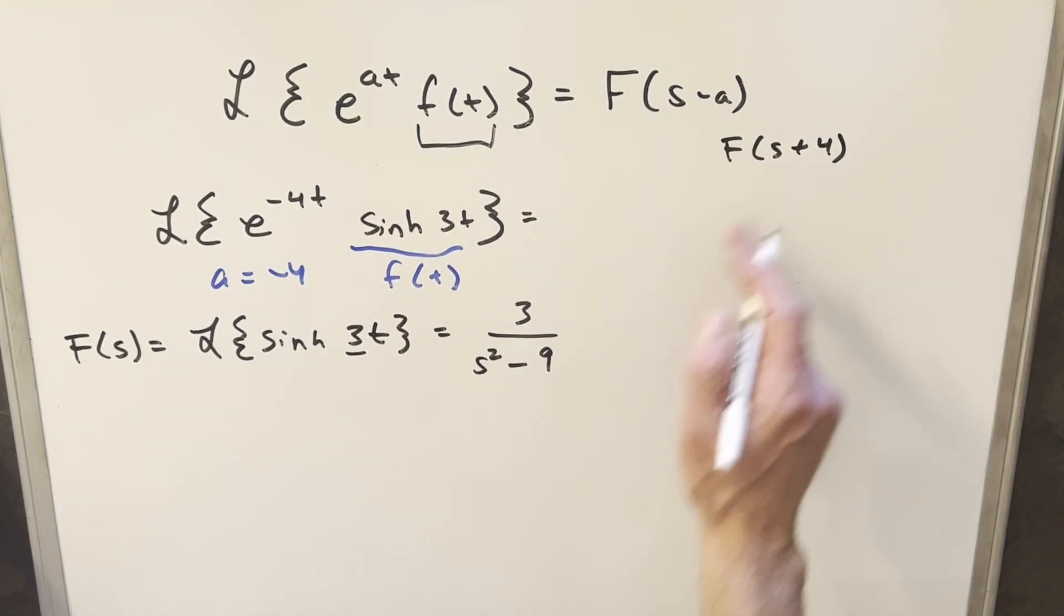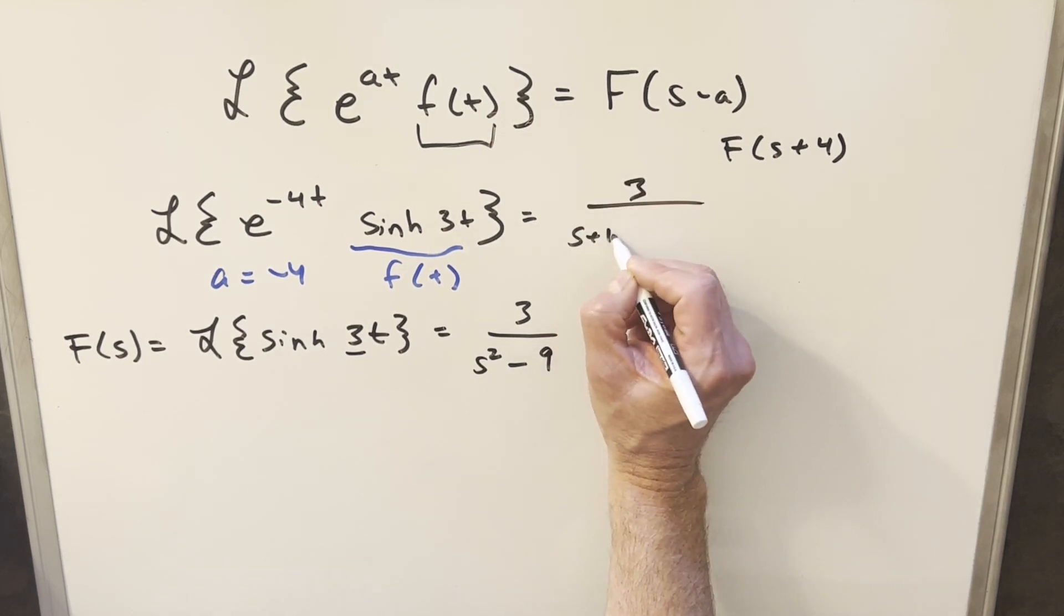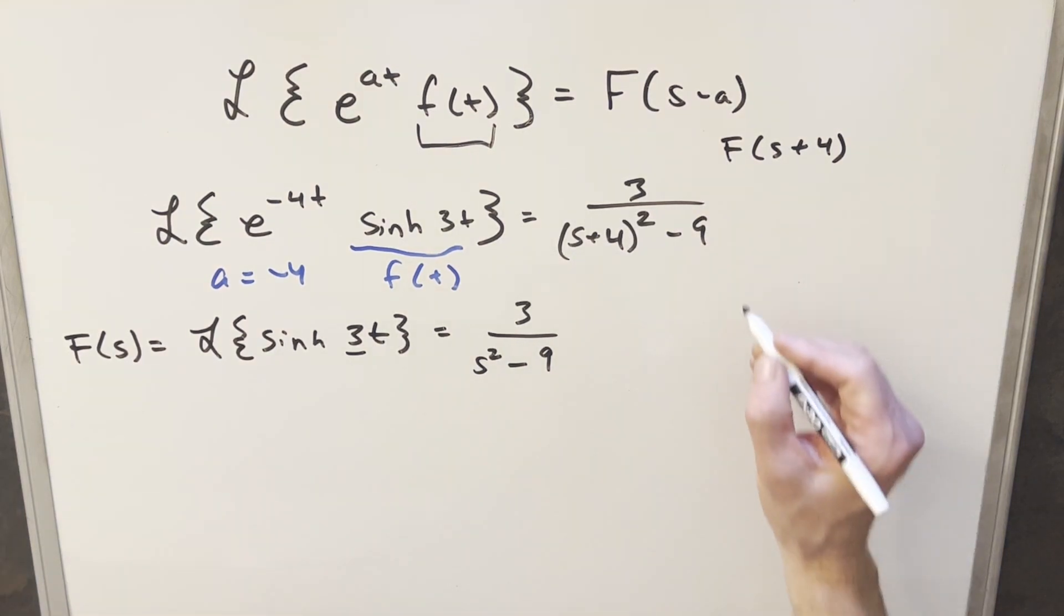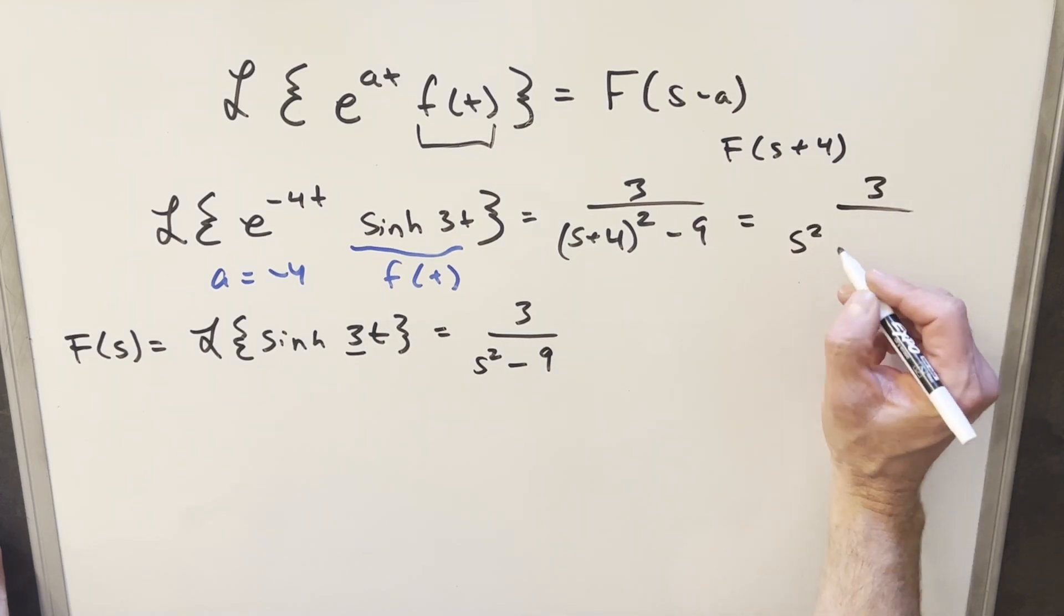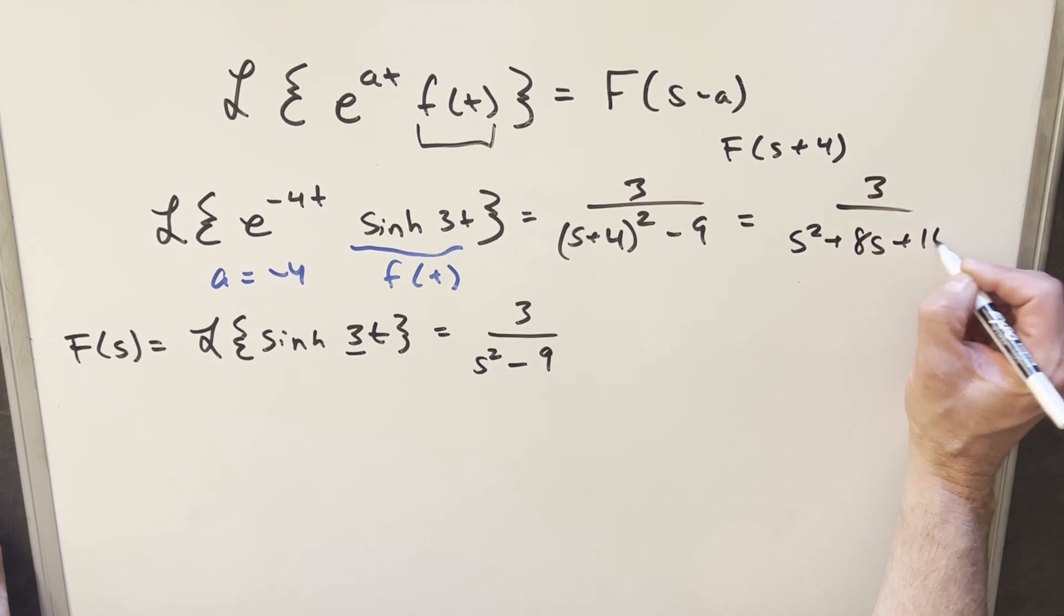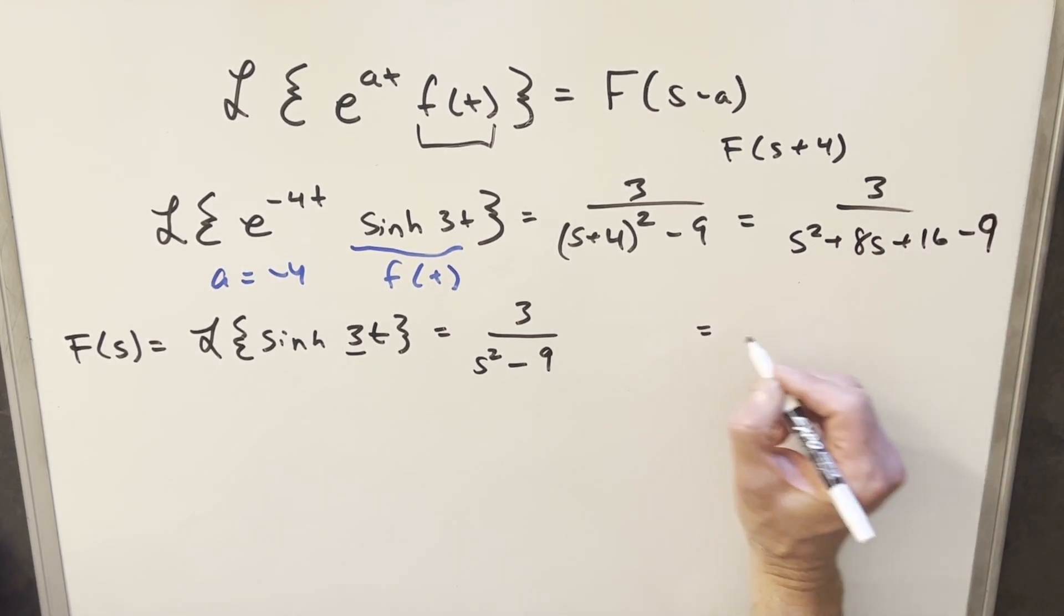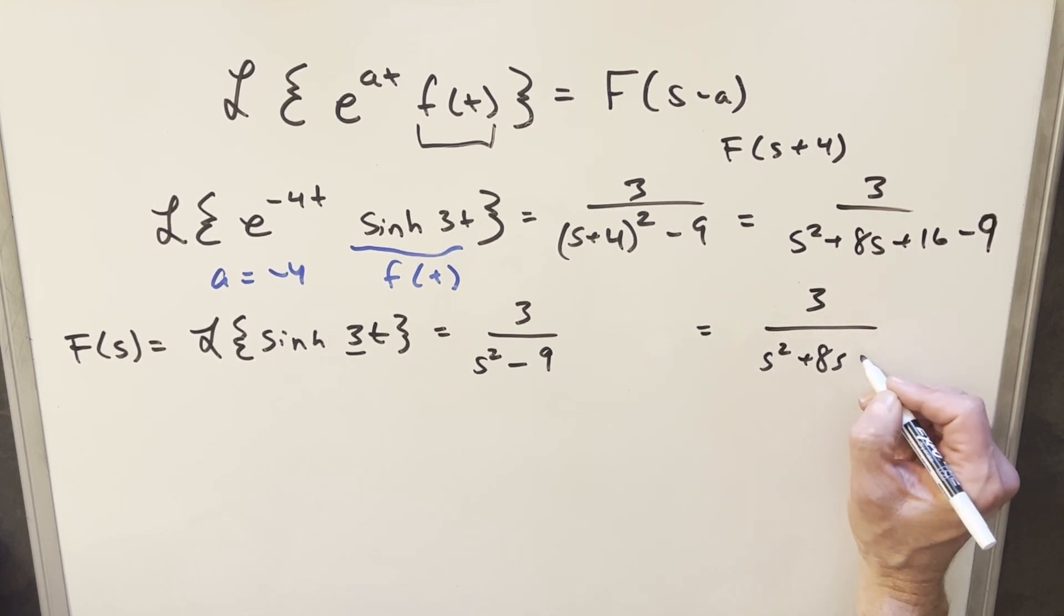And we'll just multiply this out. So we have 3 there. This is going to become s squared plus 8s plus 16 minus 9. And so for our solution for this one, we have 3 s squared plus 8s plus 7.